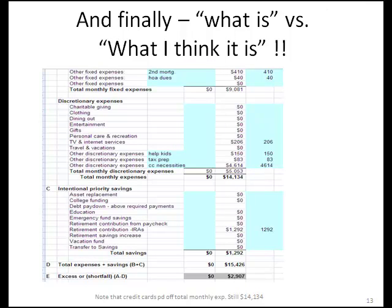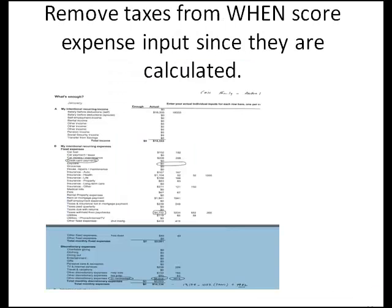As you can see here for the Case Family, their actual expenses — even without the credit cards — is $14,134 per month or $169,608 per year. Now, this is a number you can work with. It's real.